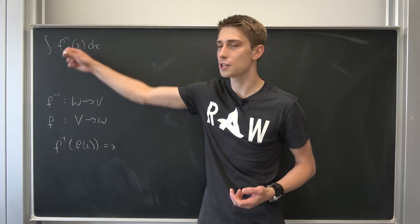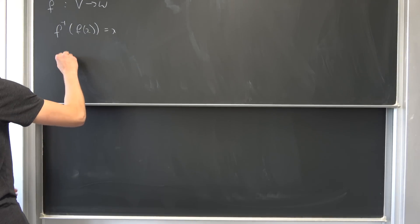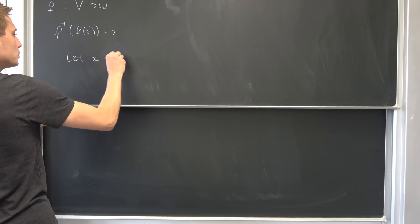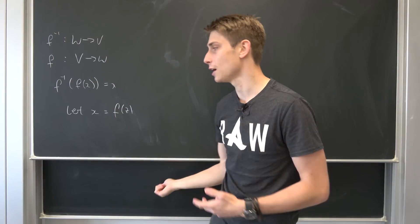So at first I would like to introduce a little substitution. I would like to substitute this x right here. So let x be equal to f of z, where f is the inverse function to our inverse function, obviously.